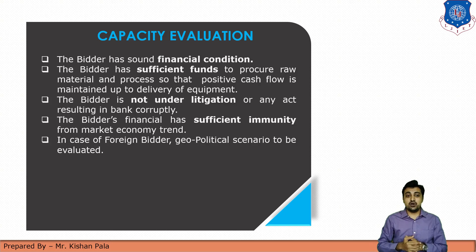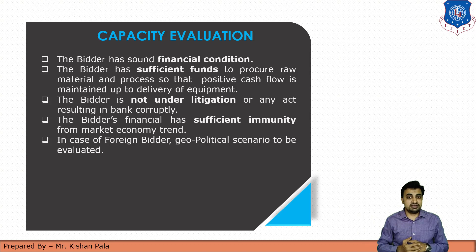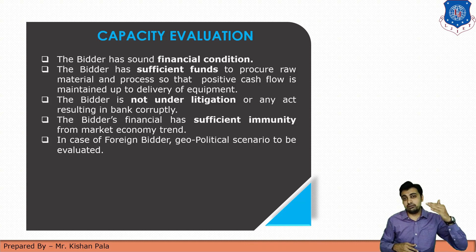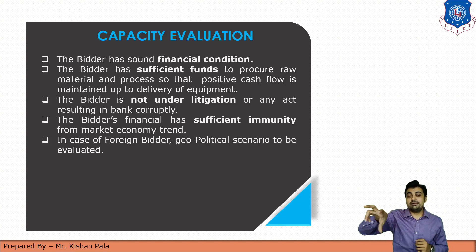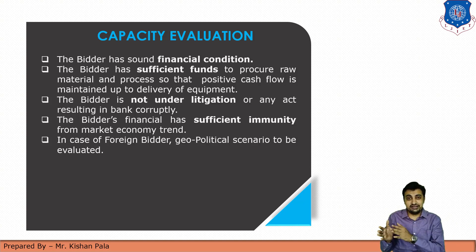The bidder's financial situation should have sufficient immunity from market economy trends. The last point is in the case of a foreign bidder — for example, if the client offered a contract for international work and there are contractors from different countries participating, and the client selects a contractor not belonging to the client's country, then the client or owner has to identify the geopolitical scenario of that contractor's country. This is all about capacity evaluation. Dear students, you should now be clear about how to submit a tender, how to open it, and how to evaluate a tender. Thank you.